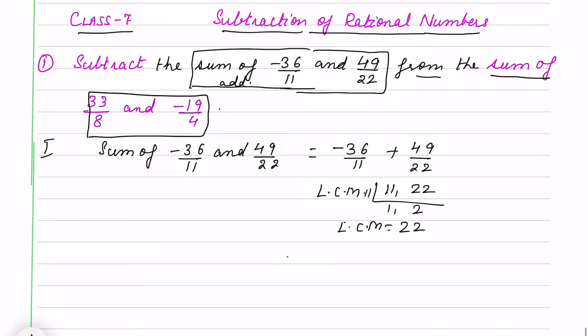Now I take LCM, here it is 22. So 11 times 2 is 22, I will change to equivalent fraction. So 11 times 2 is 22, so minus 36 times 2 is minus 72. Now 22 times 1, so I will write the same number. Now we follow the rule of integers here. One negative and one positive will be a negative number, and here it is minus 23 by 22. We have got the first sum.